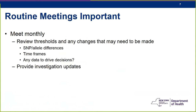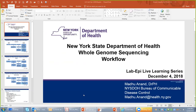We hold routine monthly meetings with a standing agenda item to review our thresholds — whether it's SNP or allele differences or time frames — and discuss whether we have data to drive those decisions. Sometimes we do, sometimes we don't, and sometimes it's a logistical consideration. It's also an opportunity to provide investigation updates, and that has been valued on both the lab and epi sides.